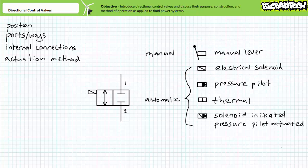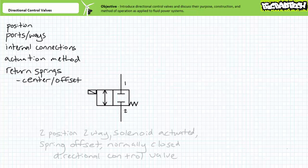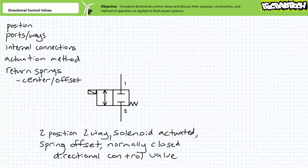A manual lever-operated valve requires an operator to physically push or pull the valve into a new position. A solenoid-operated valve uses an electrical solenoid — a type of linear electrical actuator — to physically push or pull the valve into a new position. Valves use return springs that either offset or center a valve to an initial deactivated position. This example valve is spring-offset into the normally closed position, so the electrical solenoid must be energized to push the valve into the open position for fluid to flow.